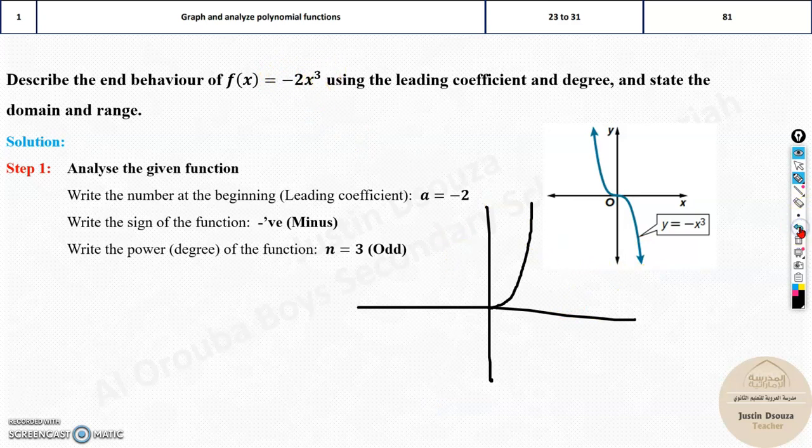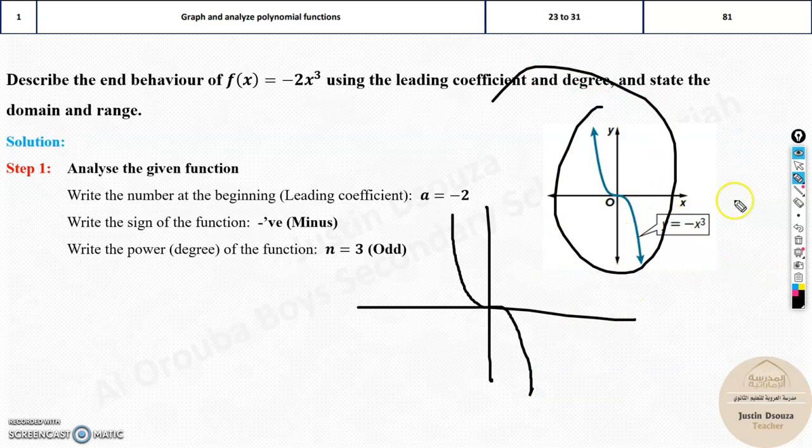Now here, since it is negative, all you need to do is swap these. Instead of right side, it will go left side. Instead of left down, it will go right down. That is it. So this is how you get the function. This is the most important thing you must know.